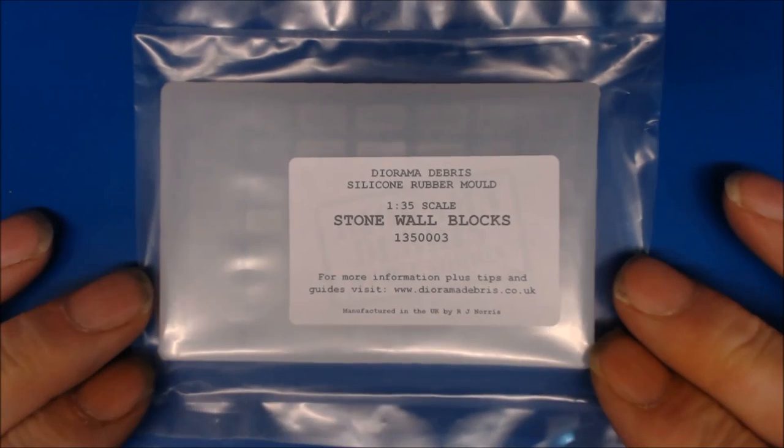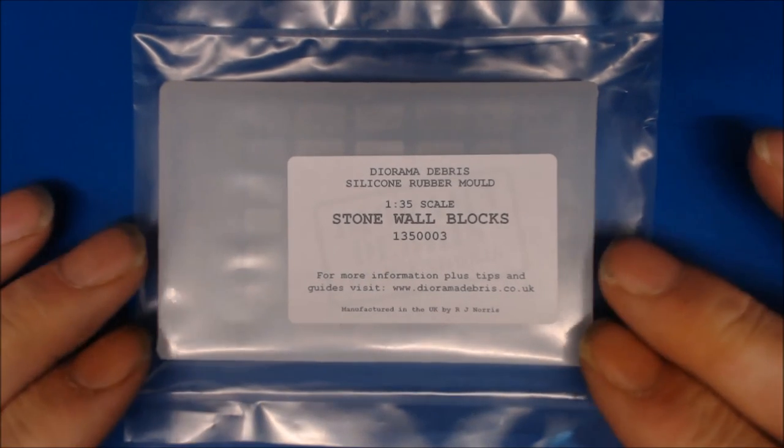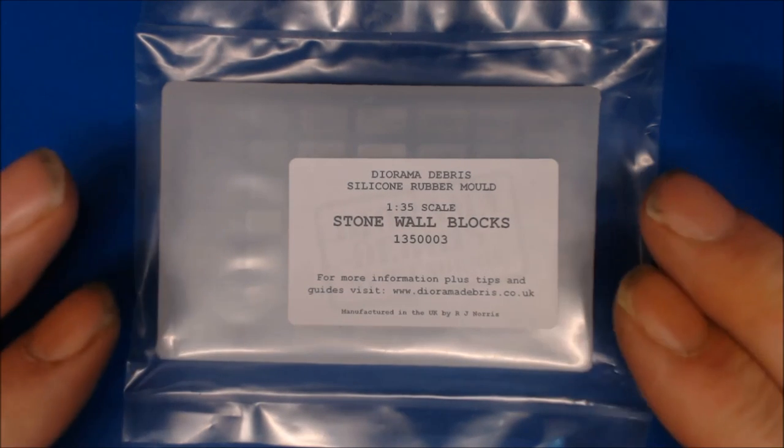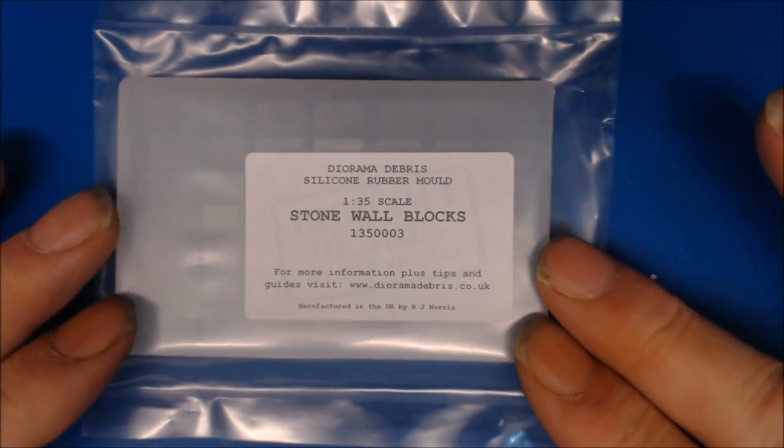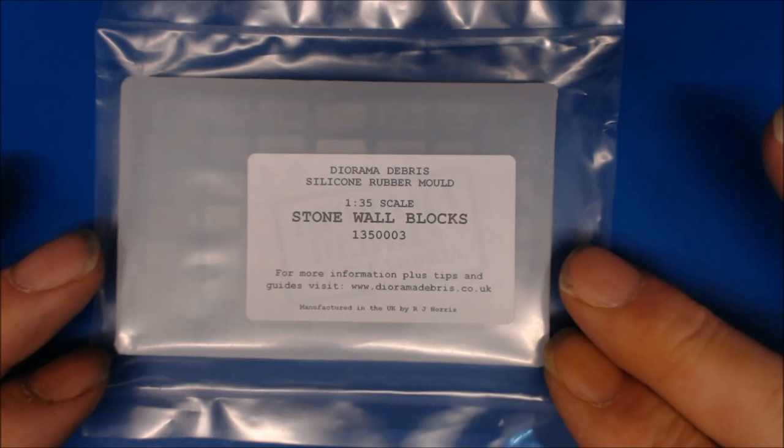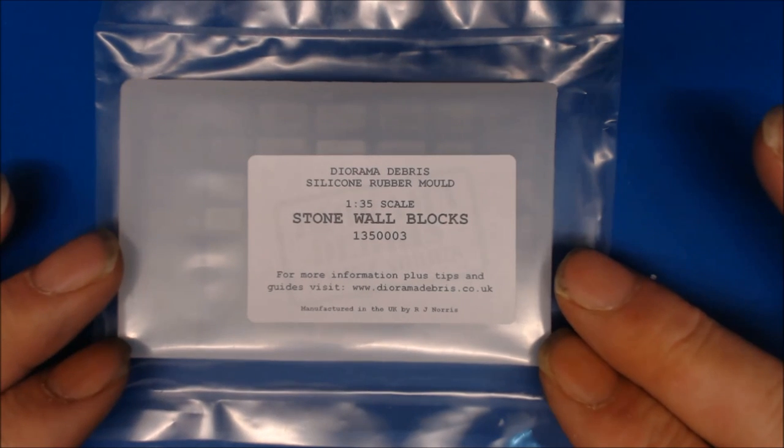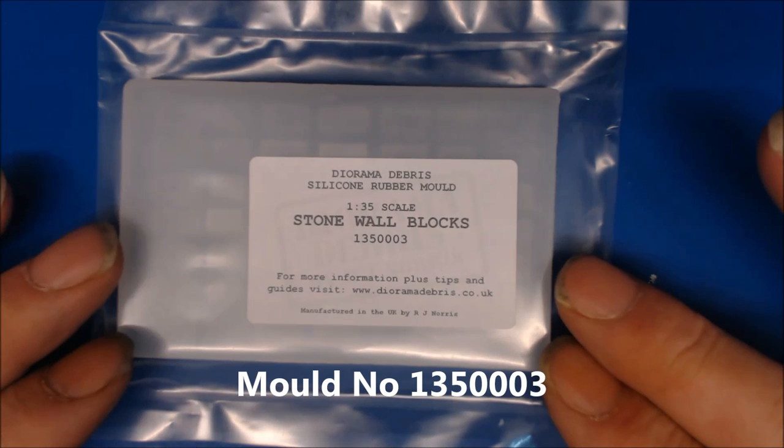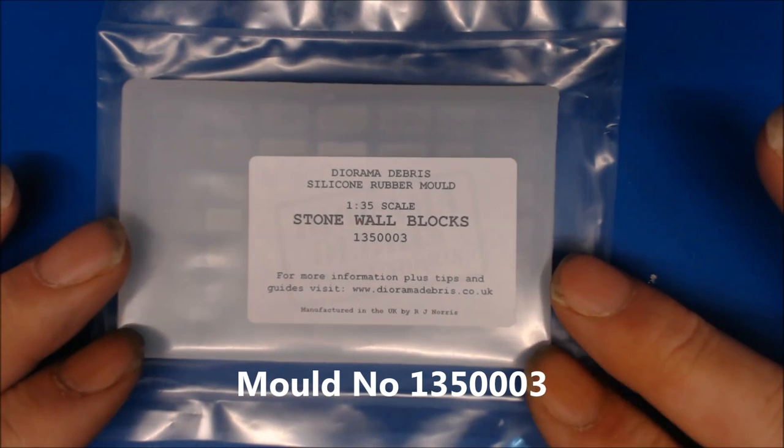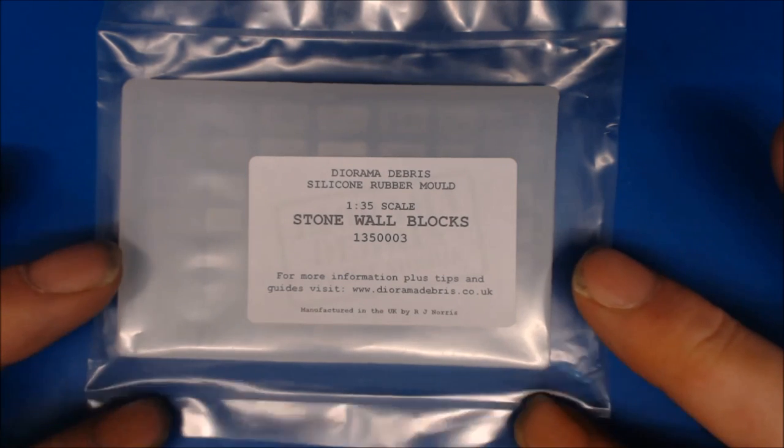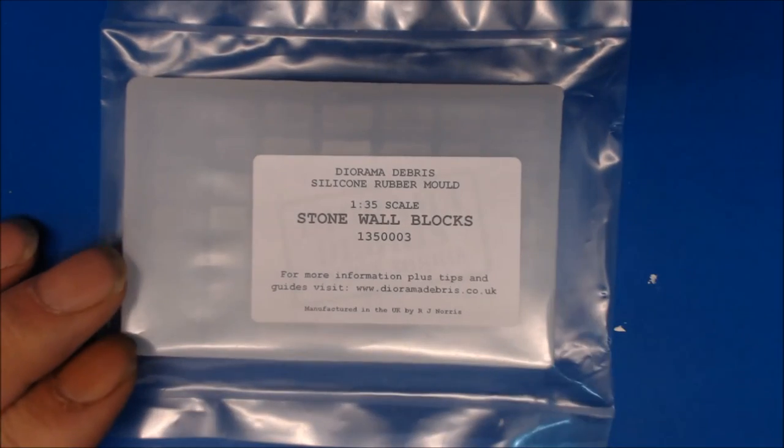Right, we have a new mold for the new year, so we'll get started and have a little look at this one. This is from Diorama Debris, a silicone rubber mold. It is 1:35 scale stone wall blocks. The mold number is 1350003. I will put a link in the description for you. This is produced in the UK by RJ Nice. Now we'll open it up and have a little look.